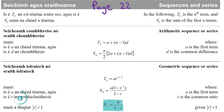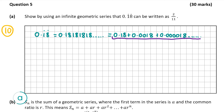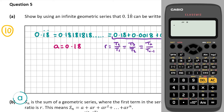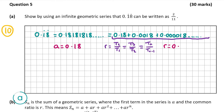Let's go back to our question and work out a and r to find our sum to infinity. Our first term is 0.18. To work out r, you divide one term by the term before it: r equals t2 divided by t1, which equals t3 divided by t2, so r equals t_n divided by t_(n-1). Taking t2 divided by t1 gives us 0.0018 divided by 0.18, which equals 1 over 100, or 0.01. Therefore r equals 0.01.